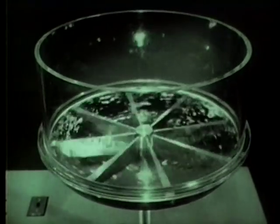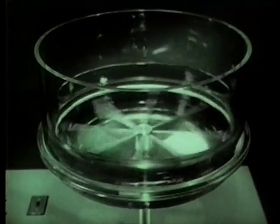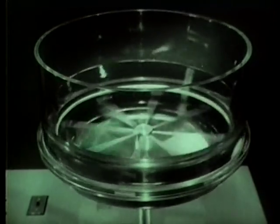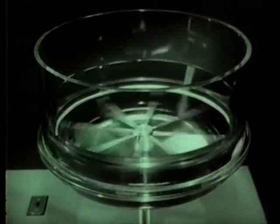By attaching a set of vanes which radiate outward from the center to the bowl, we can increase the tendency of the oil to rotate with the bowl. This causes more energy to be transferred from the bowl to the liquid.